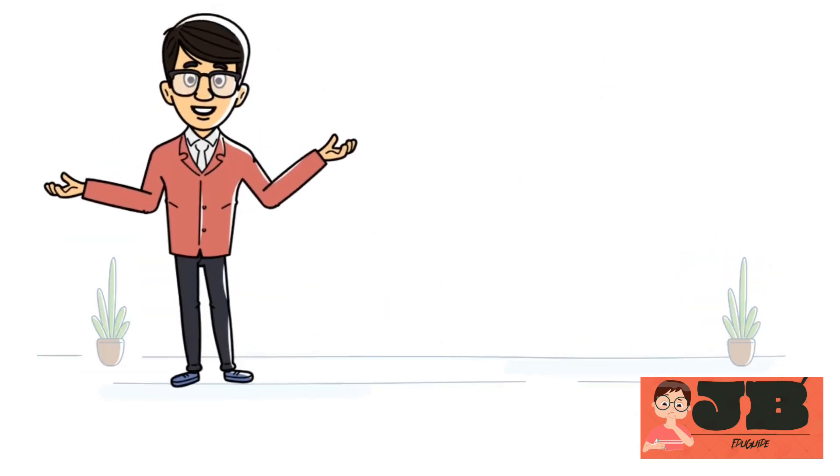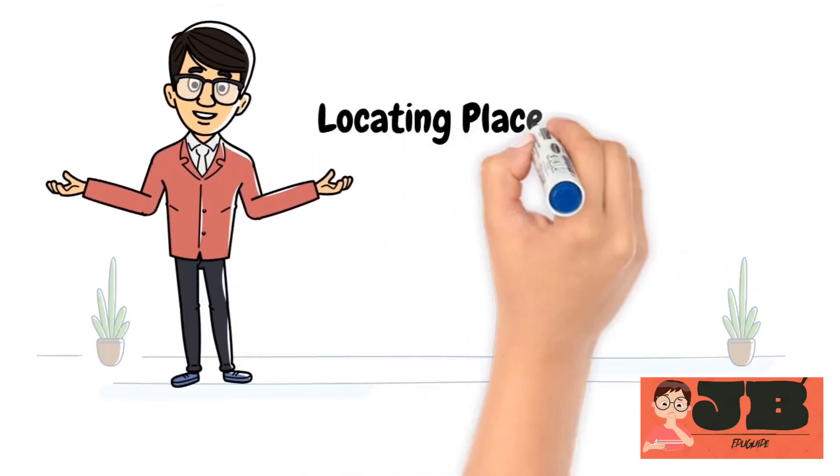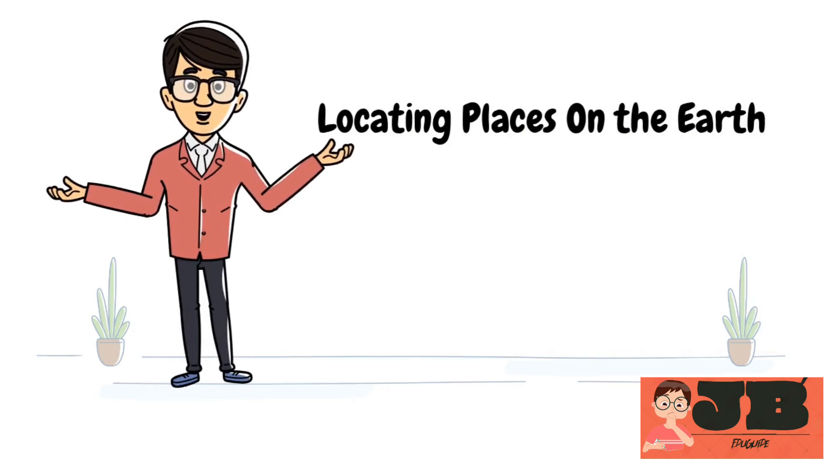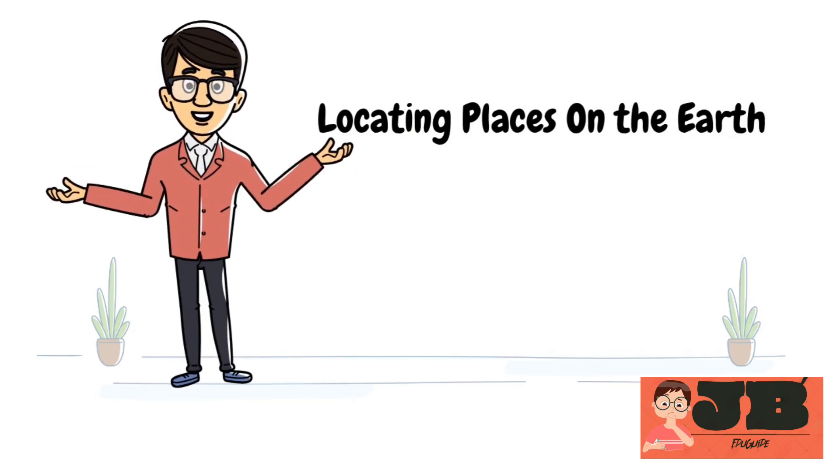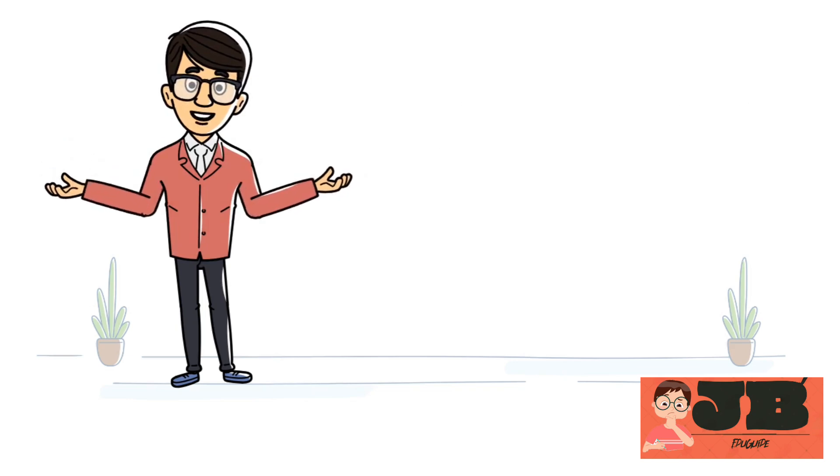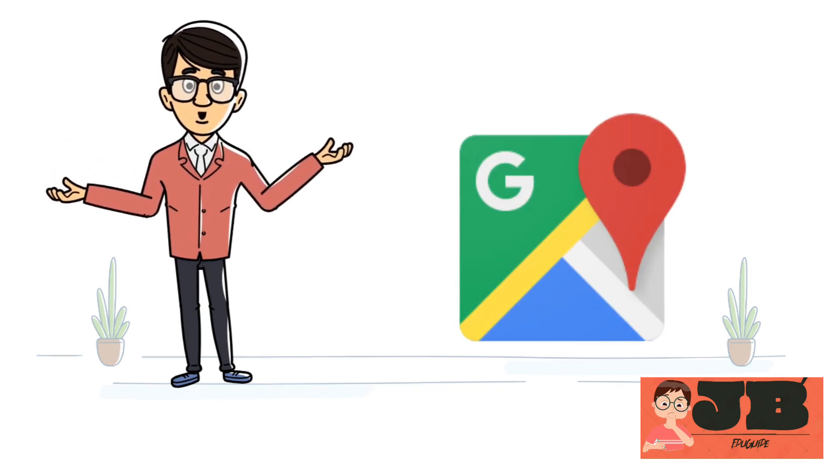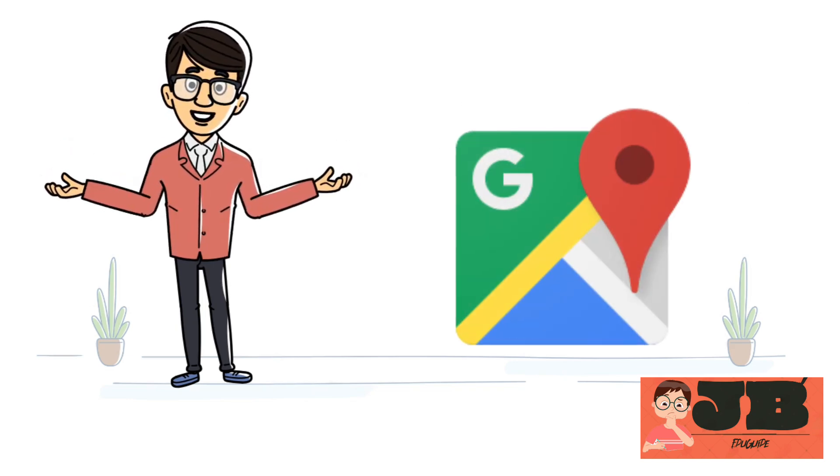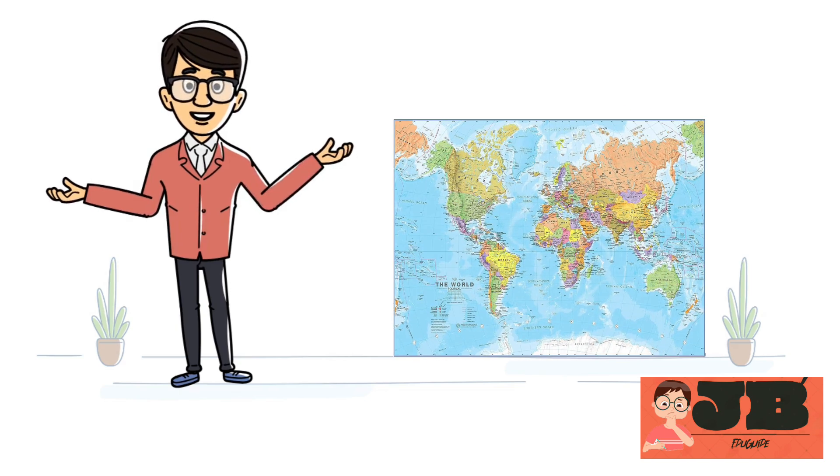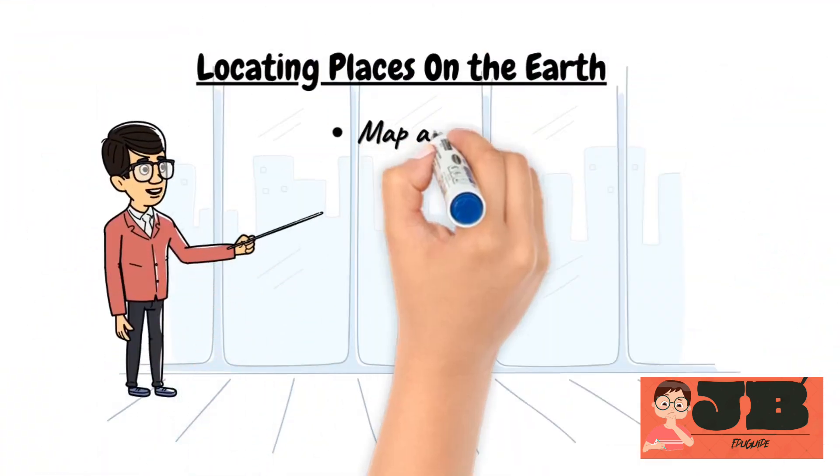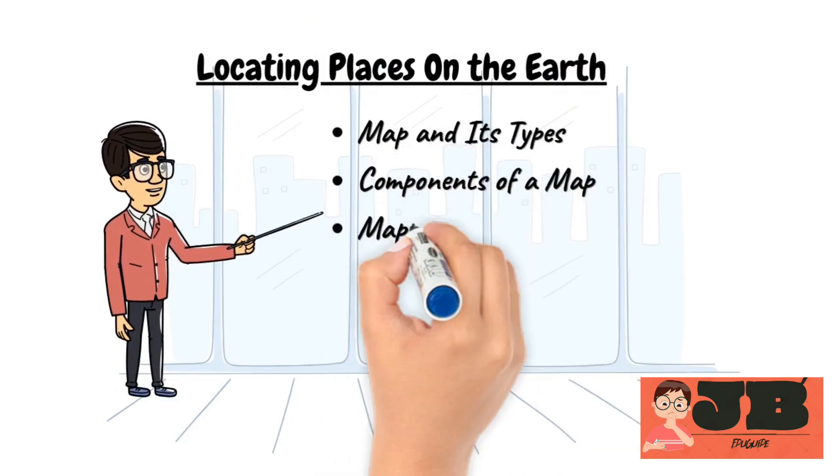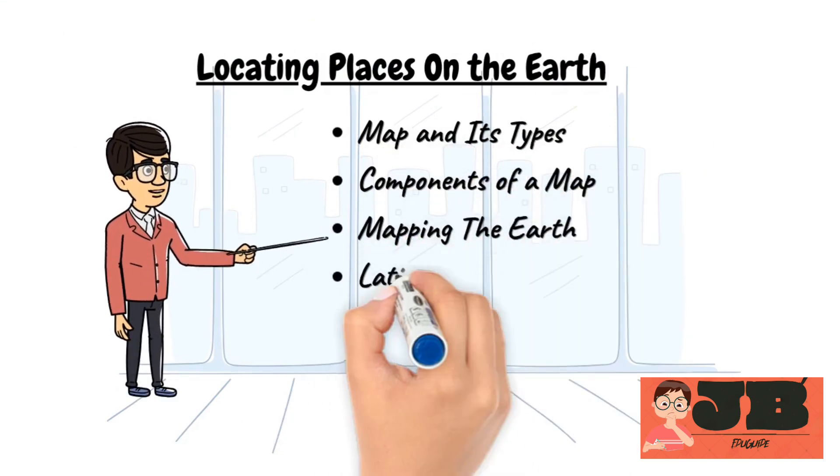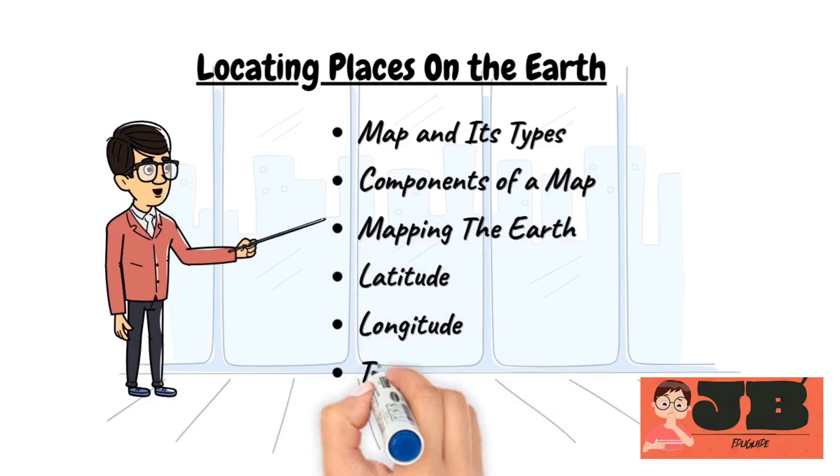Today we will understand a new topic about locating places on the earth. Open your textbooks, notebooks, and let's start. Before starting the chapter, first understand the heading: Locating places on the earth. It means how different places on the earth can be located. You might reply, sir, we will use Google map. Sounds good, but Google also uses map. So today we will understand about map and its types, components of map, mapping the earth, latitude, longitude, and about time zones.